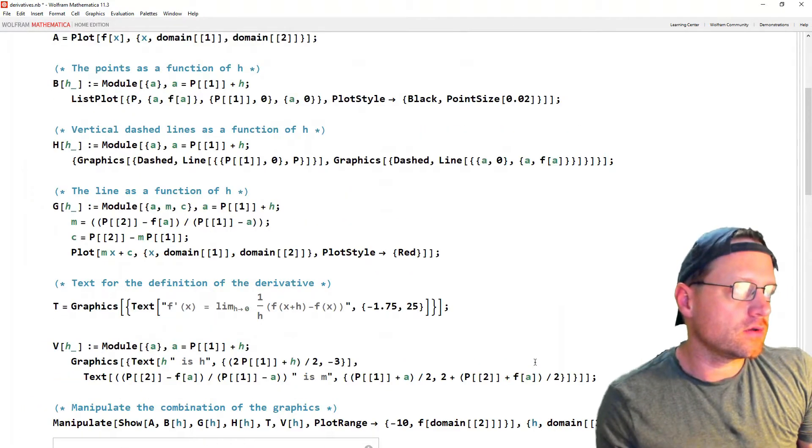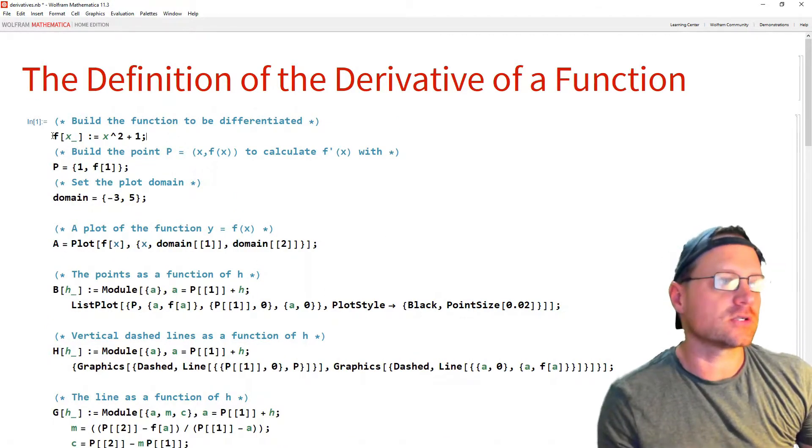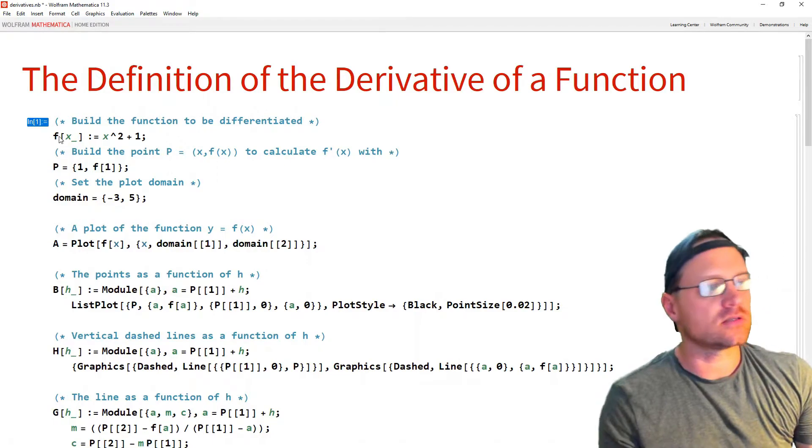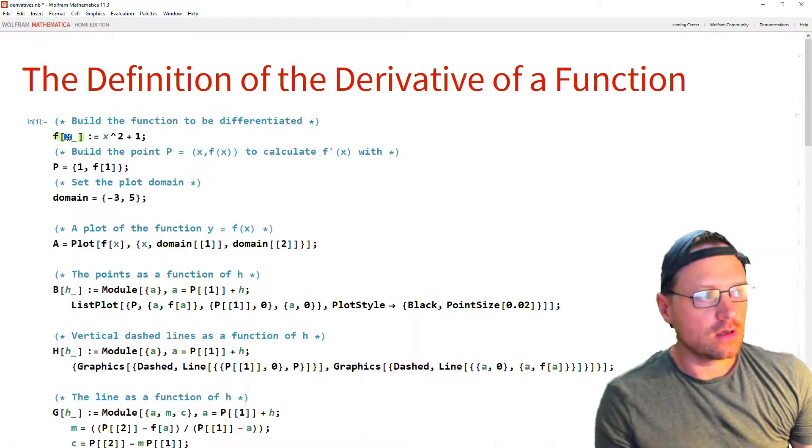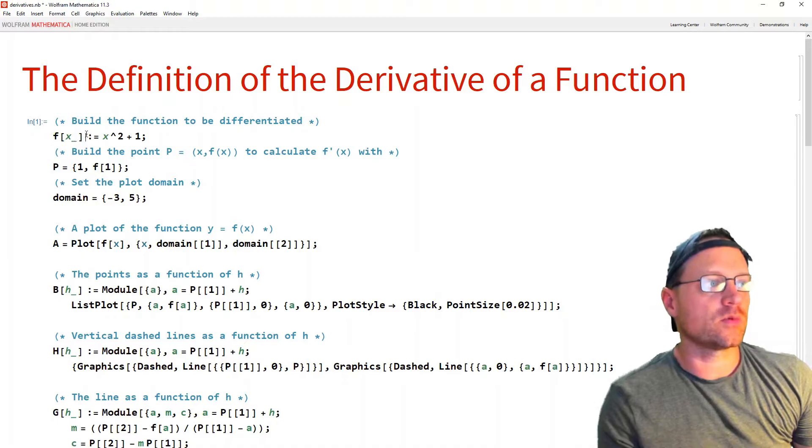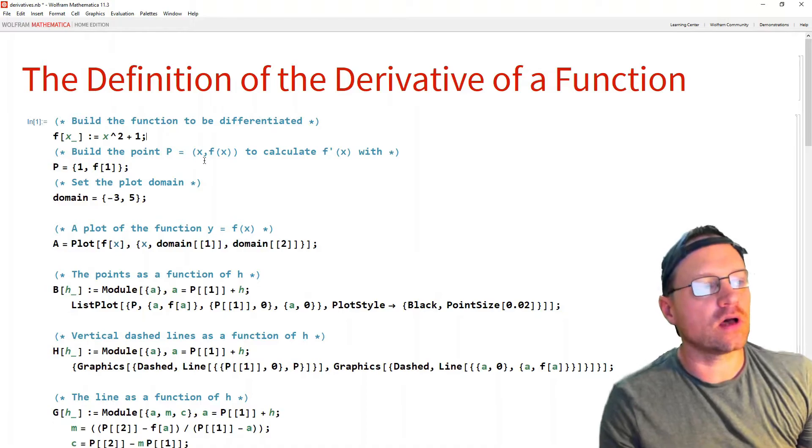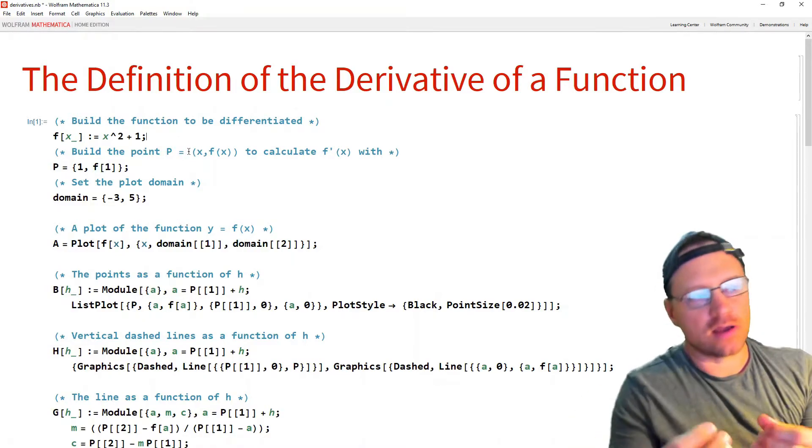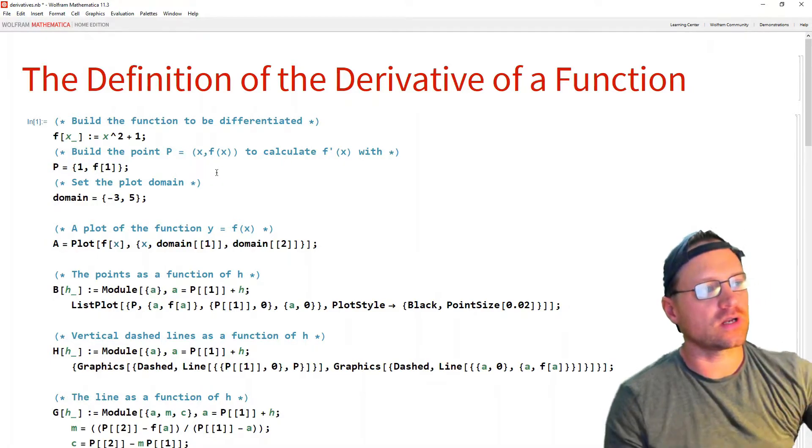All right, so you can see that I've got quite a lot of code up here. So the first thing we want to do is build a function that is the function to be differentiated. So in this case we just have f square bracket x and then underscore, and then we just use a colon equals to build a function in Mathematica. So here I have x squared plus 1. Next I want to build the point p to take the tangent at, so I have the point x comma f of x and we're going to calculate f dash of x at that point.